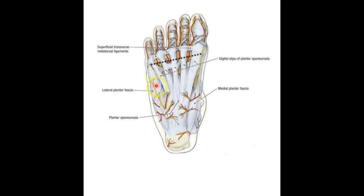Each of these three components makes up three compartments of the plantar surface of the foot. Just as we learned there was a lateral, anterior, deep, and superficial posterior crural compartment, the same applies here. We have a lateral compartment, a central compartment, and a medial compartment, each housing different muscles on the plantar surface of the foot.